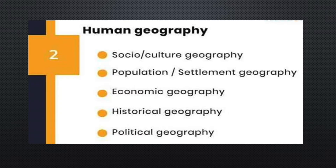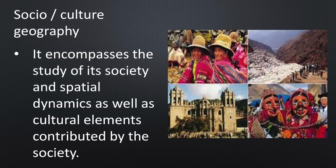Now let us see the second branch — human geography. Human geography is concerned with the spatial organization of society. In the beginning, the focus was on the description of places where people lived. More recently, economic activities received more attention with some emphasis on the regional distribution of resources and economic activities. Social and cultural geography: it studies the society and its spatial dynamics as well as the cultural elements contributed by the society.